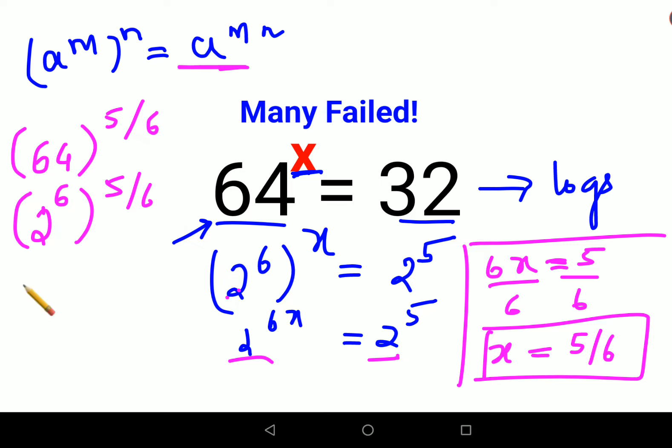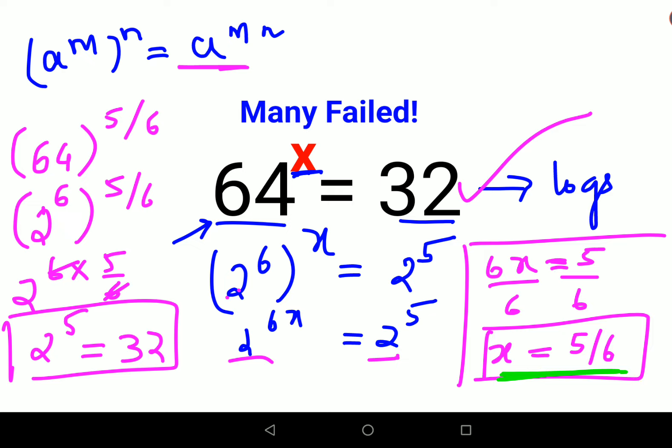And we will apply this particular rule. So this becomes 2 raised to 6 into 5 by 6. So this and this will get cancelled. We are left with 2 raised to 5 which is nothing but 32 which is your RHS. Therefore I can say value of x is nothing but 5 by 6.